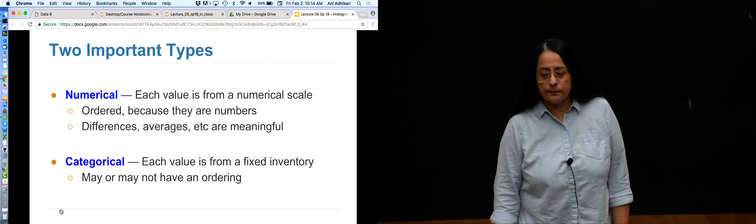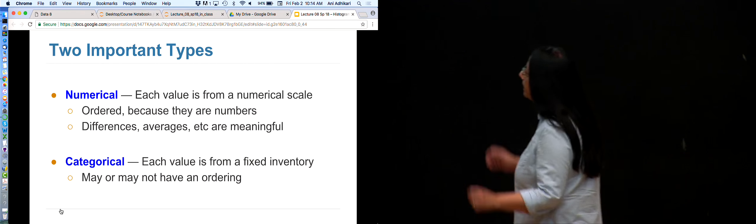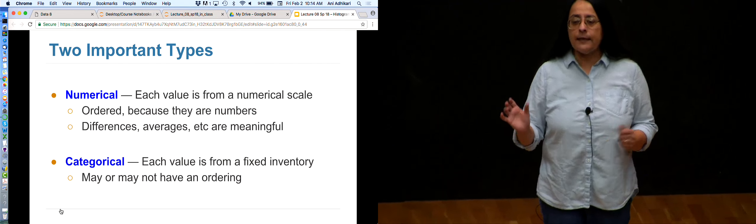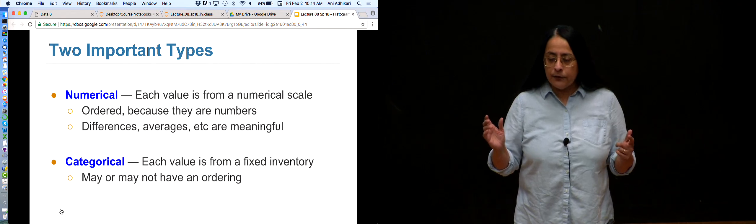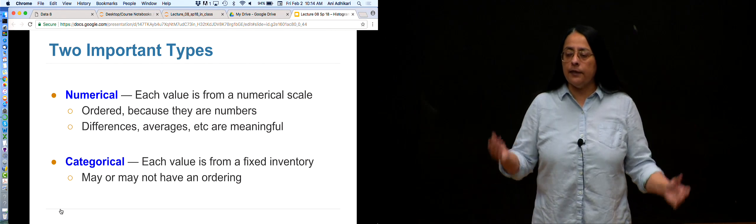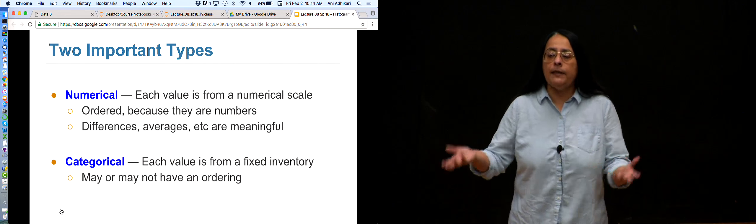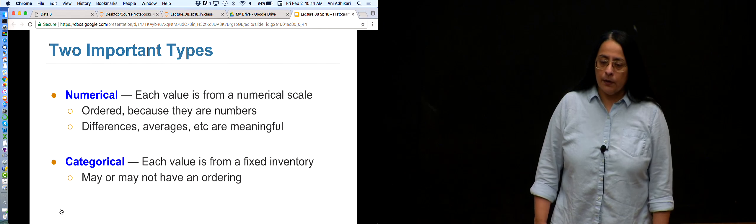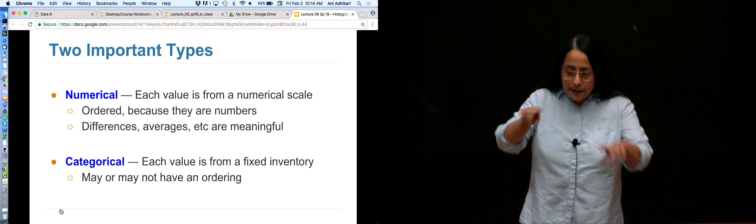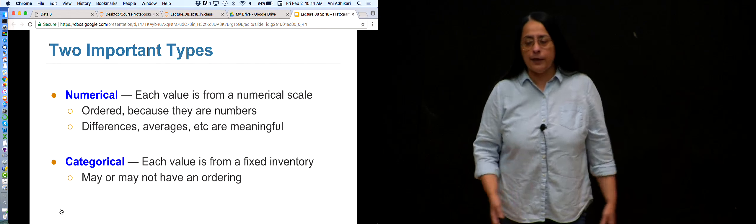Student question: are data like zip codes numerical or categorical? That is an excellent question. Zip code 94720 is a number, an integer. But does it make sense to take the difference of two zip codes? You get another number, but that number doesn't have an interpretation. In some sense they are just labels - a short way of saying it's this region in Berkeley. Some data that look numerical are actually categorical.